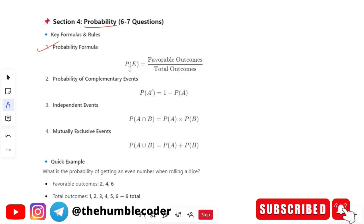Next is the important topic that is probability. In probability if you see the formula is probability equals favorable outcomes divided by total outcomes. Next up we have probability of complementary events for that we have this formula 1 minus p of a.